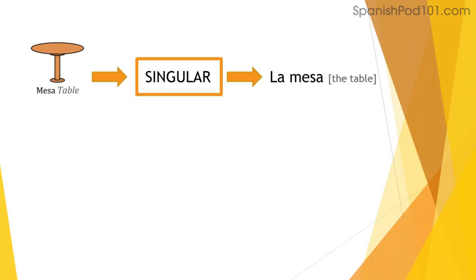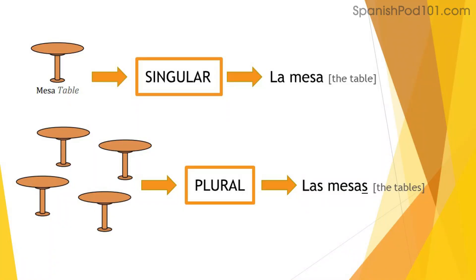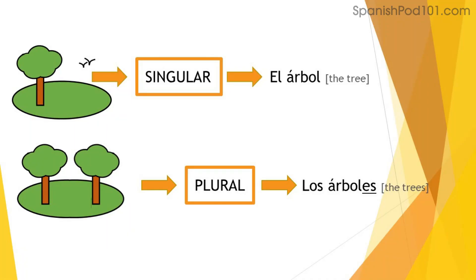When we talk about the singular form — el singular — that refers to one thing. And if we talk about the plural form, then we're referring to two or more things. Por ejemplo, mesa es singular — it's singular, we're just saying table. And the plural form of mesa would be mesas. Similarly, árbol — el singular — árbol, that's a tree, and el plural would be árboles. So that's the plural; we're talking about two or more trees and two or more tables.